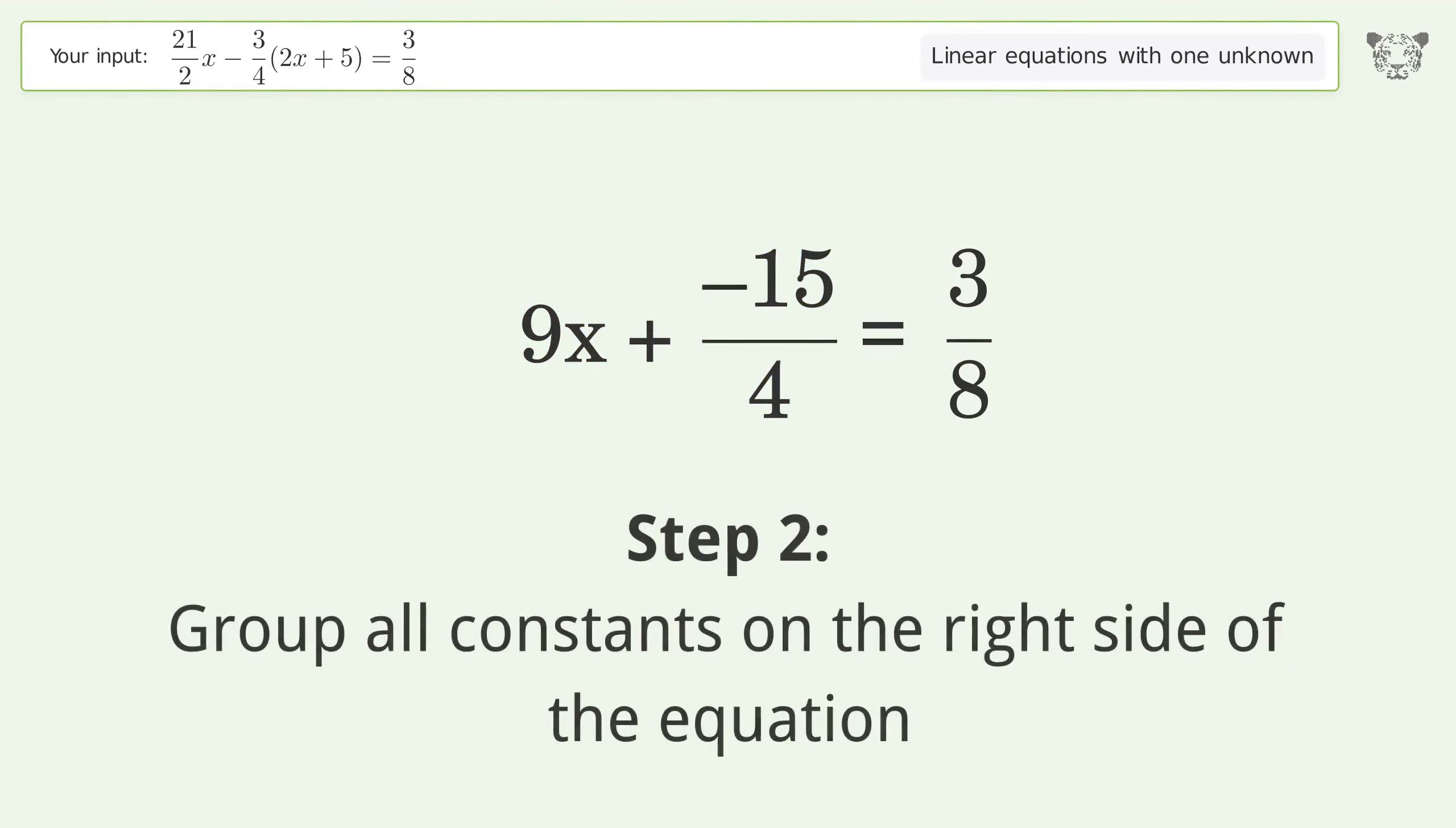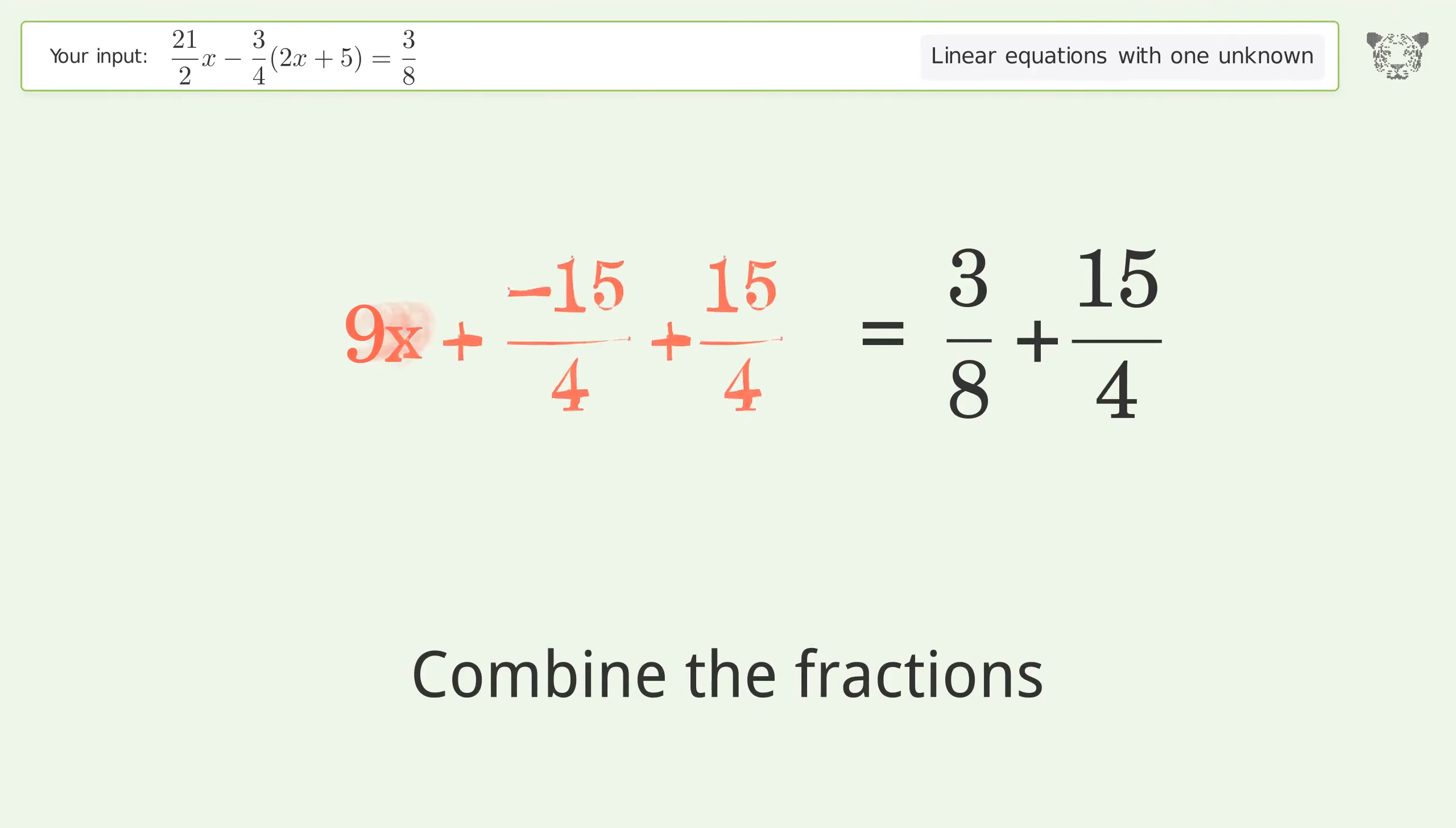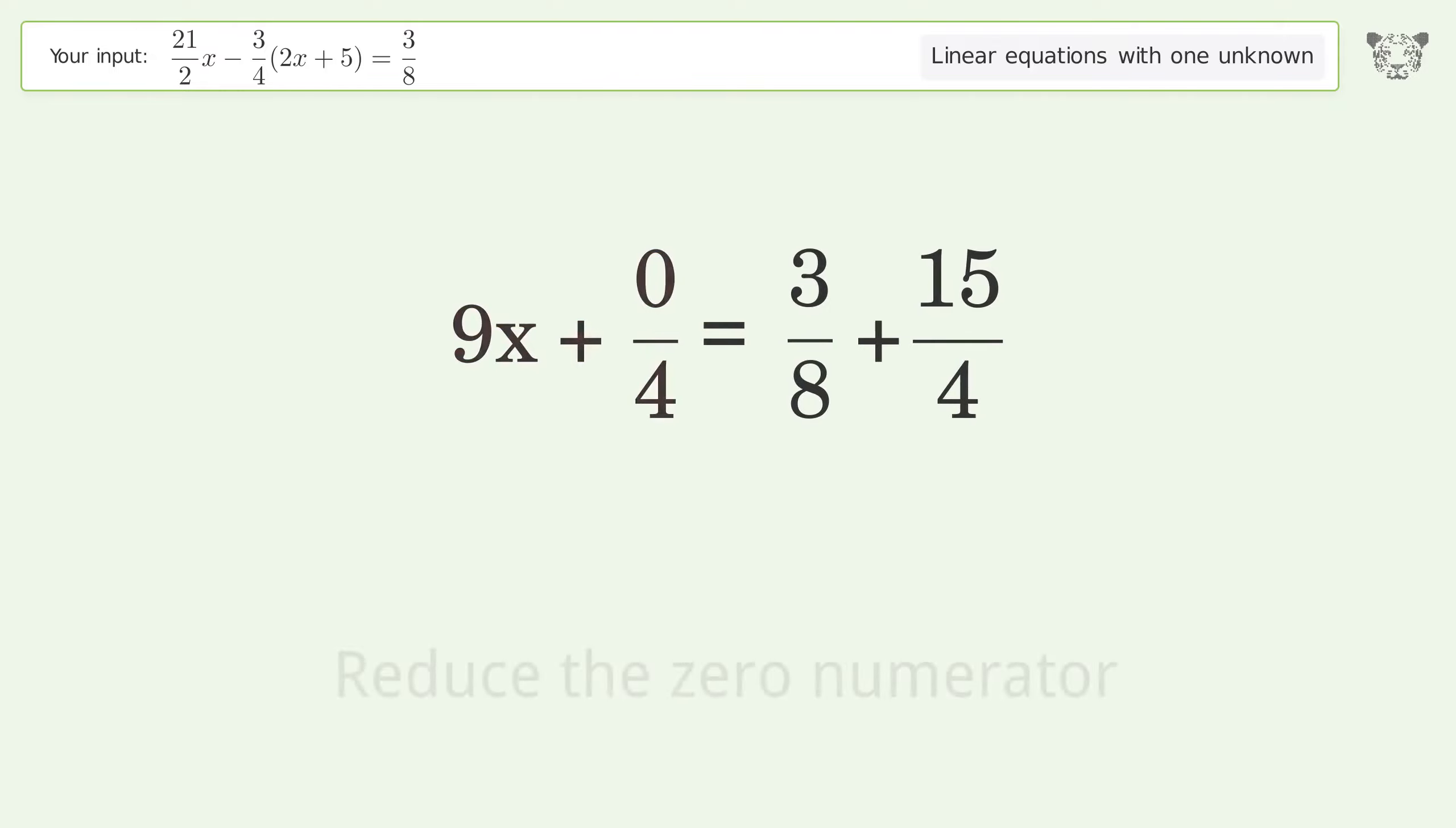Group all constants on the right side of the equation. Add 15 over 4 to both sides. Combine the fractions. Combine the numerators. Reduce the zero. Simplify the arithmetic.